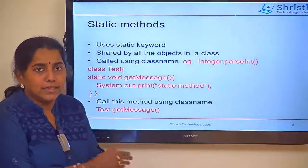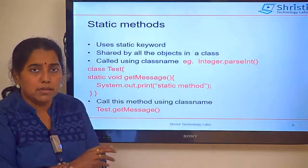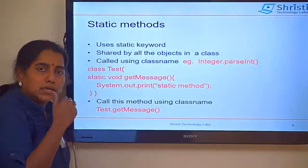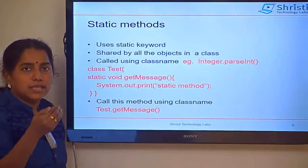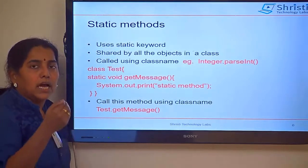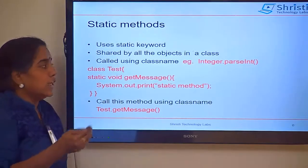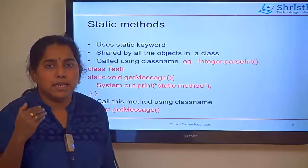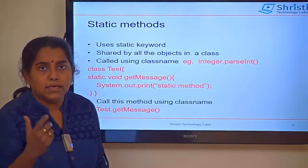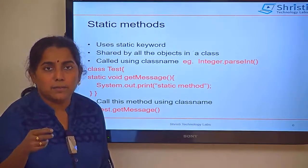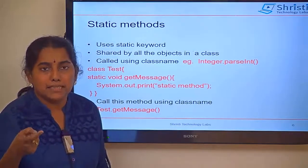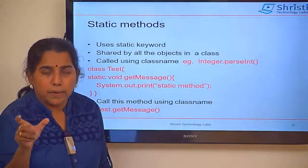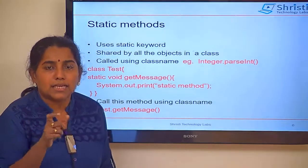What is the static method? We have seen public static void main. Similarly, you can create static methods. For example, static void getMessage. You can have any number of static methods. The idea is that you want to use this method without creating an object — using the class name, you call this method. There are multiple utility methods in different classes that are made static so you are not forced to create an object. For example, parseInt and parseDouble — we never create an object; we call Integer.parseInt directly. So parseInt is a static method called with the class name.